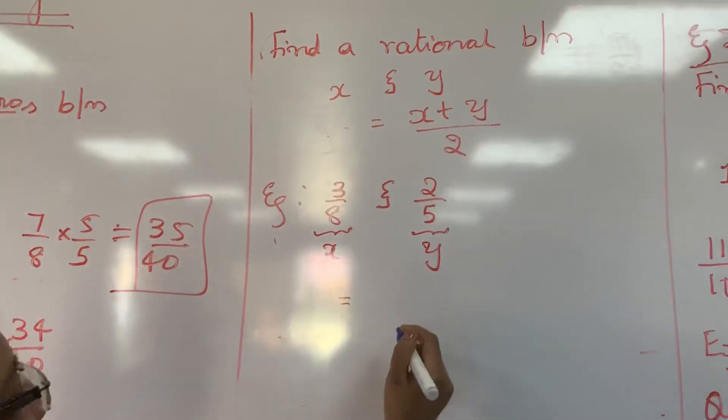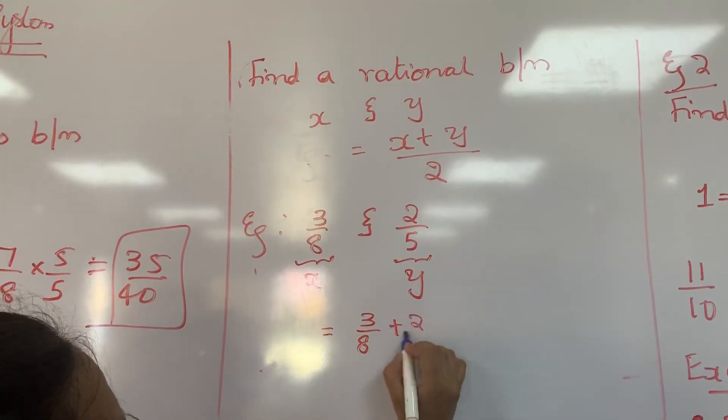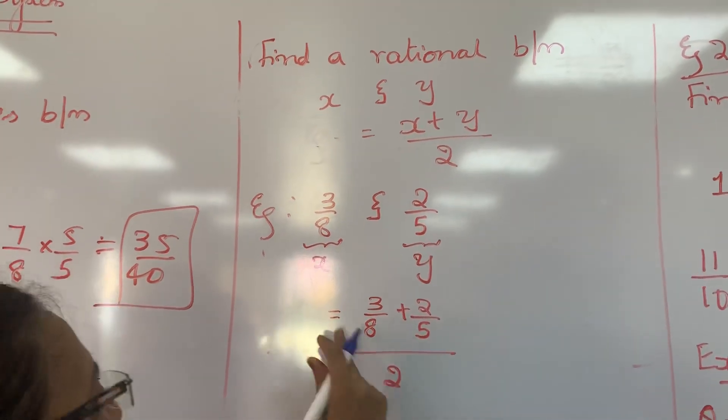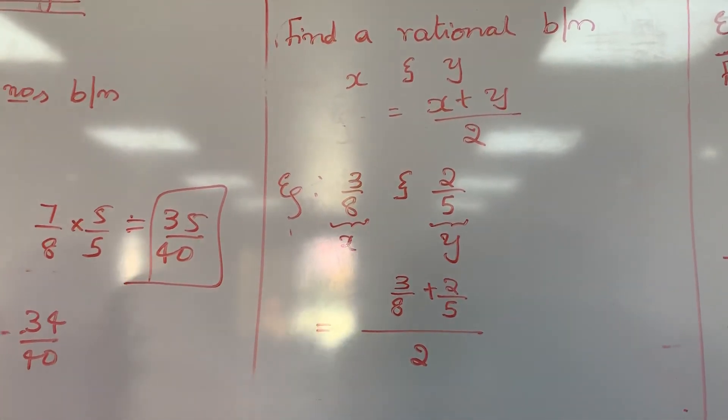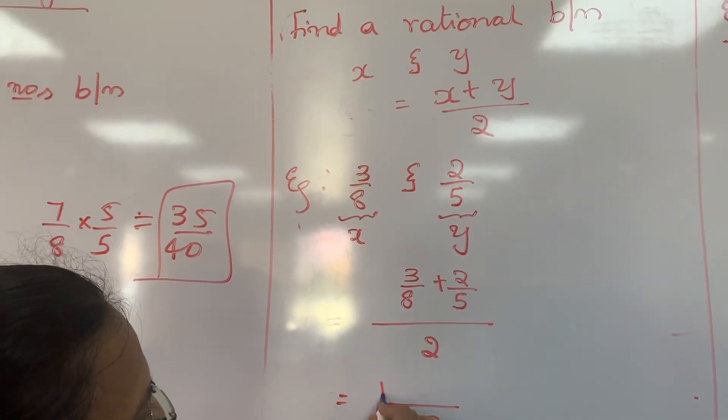So what will be our rational number between this? X plus Y by 2. 3 by 8 plus 2 by 5, whole divided by 2. Be careful while adding the rational number. So LCM is 40, first term becomes 15, second is 16, whole divided by 2.